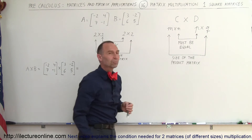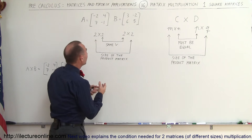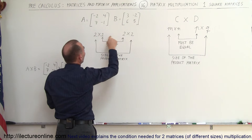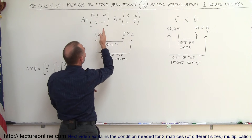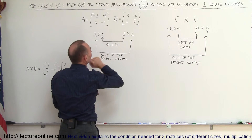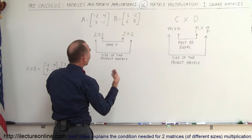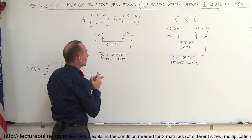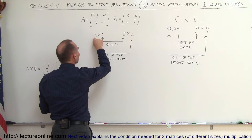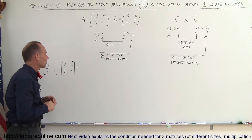Since we're dealing with two square matrices, take matrix A and matrix B for example — this has two rows and two columns, and this has two rows and two columns. The number of columns of the first matrix equals the number of rows of the second matrix, so we can proceed with the multiplication. The size of the resulting product matrix will simply be two by two — the number of rows of the first matrix times the number of columns of the second matrix.